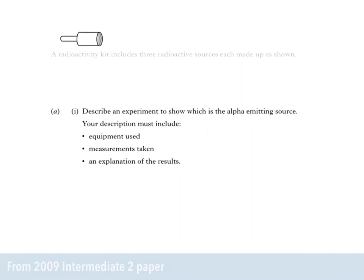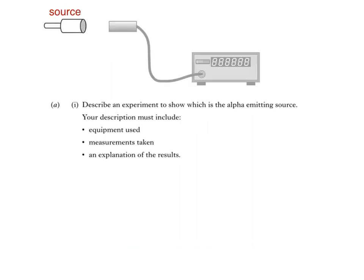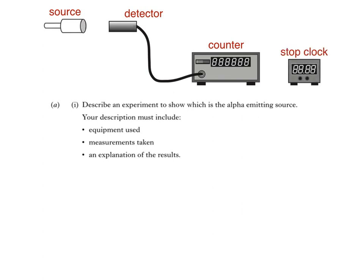What we'd need is a radioactive source and a detector, a Geiger-Müller tube, connected to a counter and a stop clock. What we could do then is measure the count rate, say for a minute, with the source placed in front of the detector, then repeat with a piece of paper placed between the source and the detector. Alpha particles are absorbed by paper, so there would be a large decrease in the count rate with the piece of paper in place.